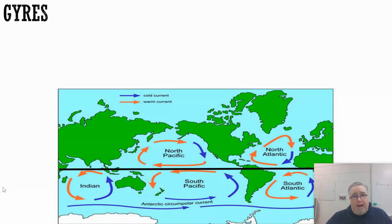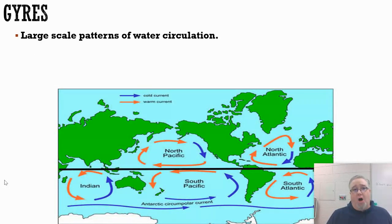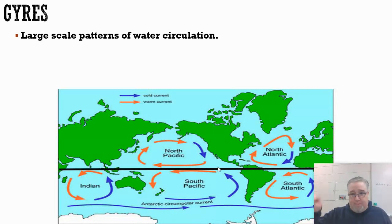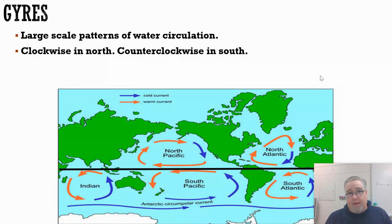A couple of vocab terms: this is called a gyre. Gyres are large patterns of water circulation. In this picture, you can see the Pacific Ocean with a large circulatory pattern in the northern part and one in the southern part. We also have gyres in the Indian Ocean, the South Atlantic, and the North Atlantic. In the northern hemisphere, they move in a clockwise fashion; in the southern hemisphere, they move counterclockwise.